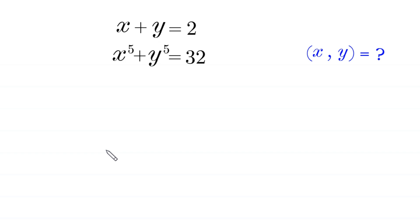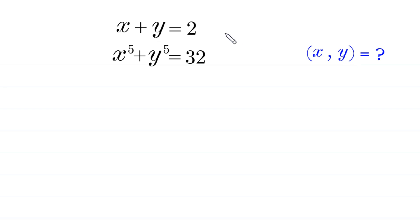Hello everyone, welcome. We are going to solve this very nice system of equations: x plus y is equal to 2, and x to the power 5 plus y to the power 5 is equal to 32. We need to find all possible values of x and y. Let's call the first equation 1 and the second equation 2.